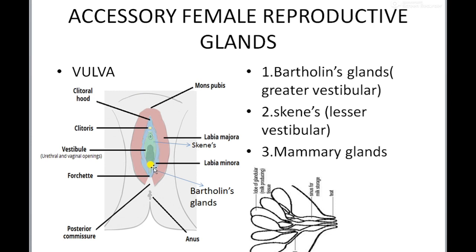At the junction of the labia minora, a small erectile structure is present known as the clitoris, which is homologous to the penis in males. Above this clitoris, a hood-like structure known as the clitoral hood is present. The clitoris is highly supplied with nerve fibers and is a very sensitive portion. At the posterior position of the vaginal orifice, a pair of glands known as Bartholin's glands are present.